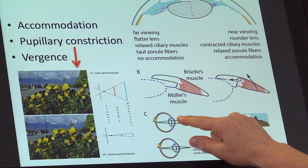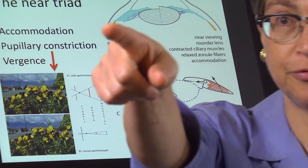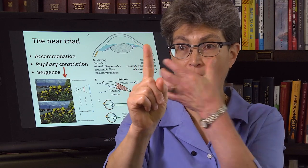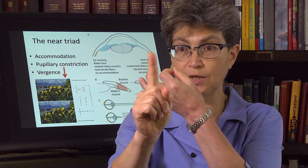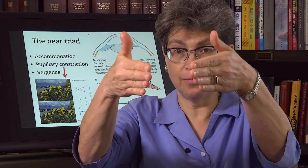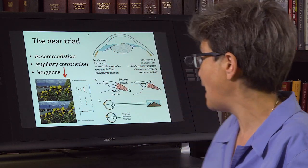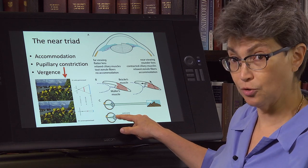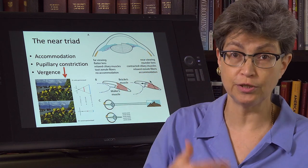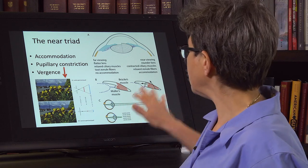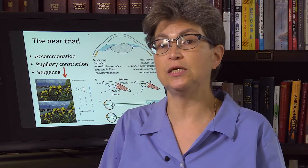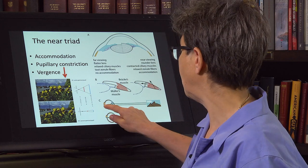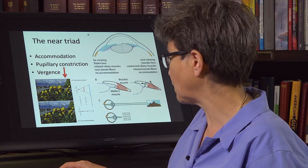Finally, we converge our eyes. If I'm looking out there and then look at my finger, you can see that my eyes have looked in — medial rectus on both sides. I'm converging instead of looking out. That angle at which the light rays hit the cornea is also contributing to an increase in refractive power. So these three things — accommodation, pupillary constriction, and convergence — enable us to see nearer objects and have light from them focus directly onto the correct spot in the retina.